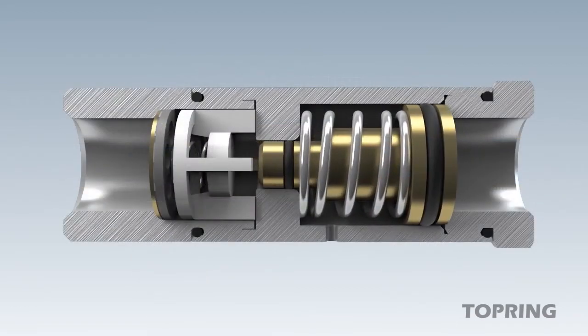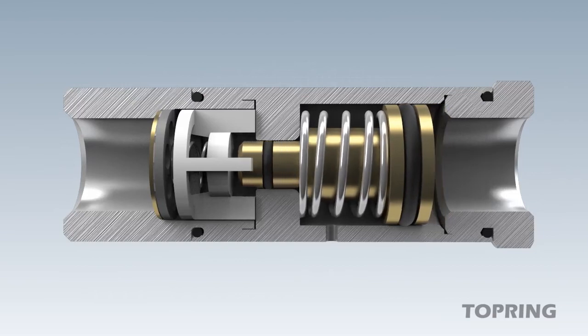If the preset output pressure is less than the spring force, the spring keeps the piston and thus the valve seat open.